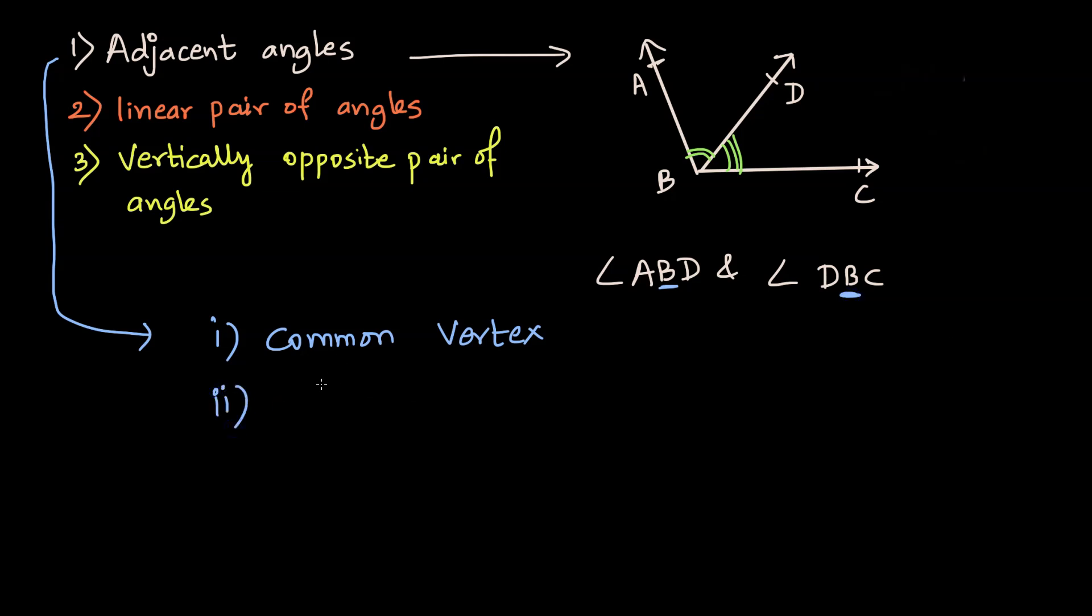The next thing to look at for adjacent angles is that they have a common arm. So common arm is basically an arm of an angle. So in angle ABD, AB and BD are the arms. So do I see a common arm? Yes. BD here and DB here are the common arms. So basically this particular arm that I see is a common arm, which is BD.